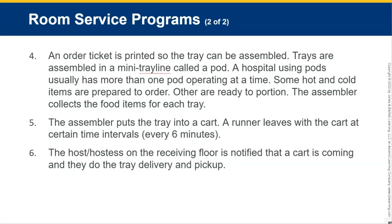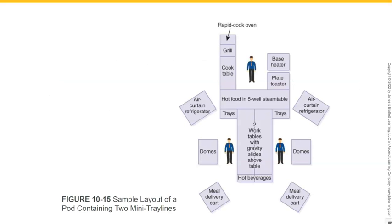Trays are assembled in a mini tray line called a pod. A hospital using pods usually has more than one pod operating at a time. Some hot and cold items are prepared to order; others are ready to portion. The assembler collects the food items for each tray, puts the tray into a cart, and the runner leaves with the cart at certain time intervals — maybe every six minutes. The host or hostess on the receiving floor is notified that a cart is coming and handles tray delivery and pickup. The traditional tray line needs upwards of nine people; the room service pod needs only about three, saving significant labor costs.